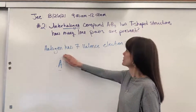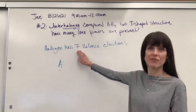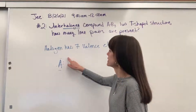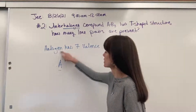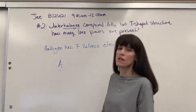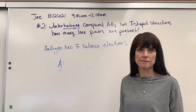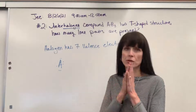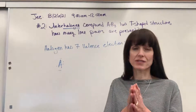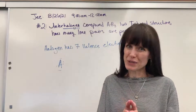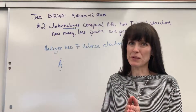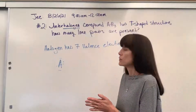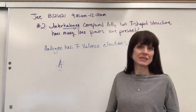Remember, halogens have seven valence electrons, and I did the electron dot right here for a halogen. When you approach Lewis dot structures — I'll also include this link if you want to review Lewis dot structures — you always go through three steps.